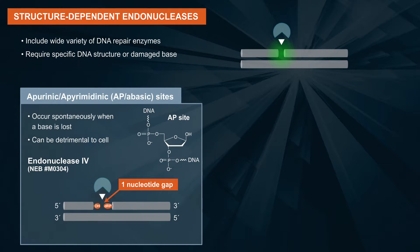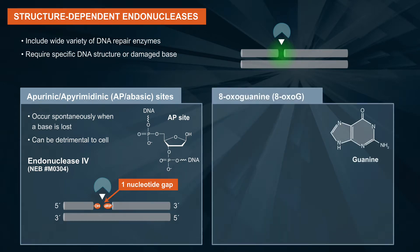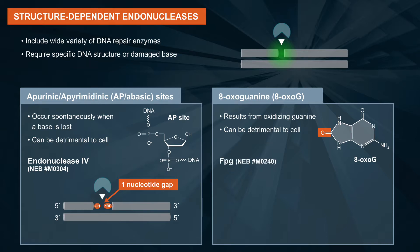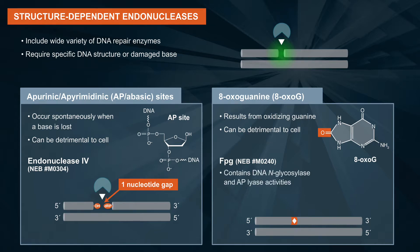Endo IV catalyzes the cleavage of the DNA phosphodiester backbone at AP sites via hydrolysis, leaving a one-nucleotide gap with 3' hydroxyl and 5' deoxyribose phosphate termini. 8-oxoguanine, more commonly known as 8-oxo-G, is a common DNA error that results from oxidizing guanine, and is also detrimental to the cell. An example of a DNA repair enzyme that removes this type of error is FPG.